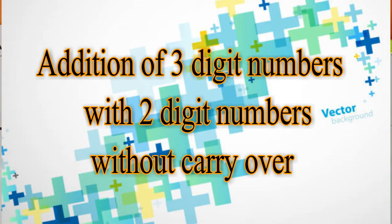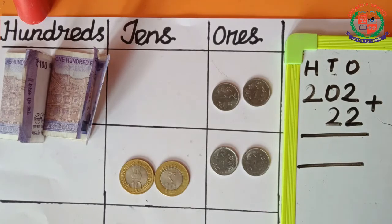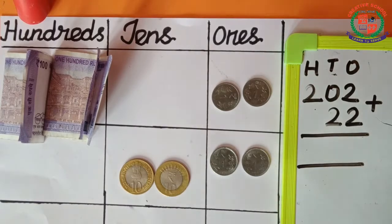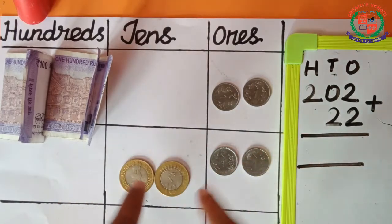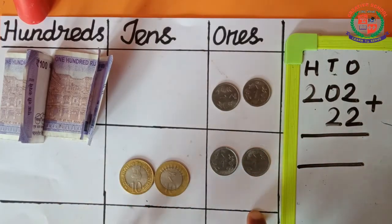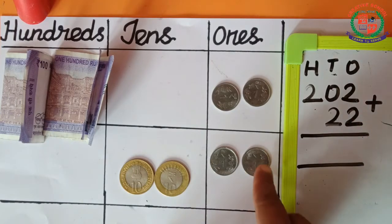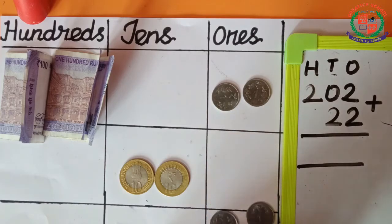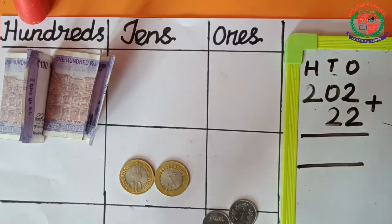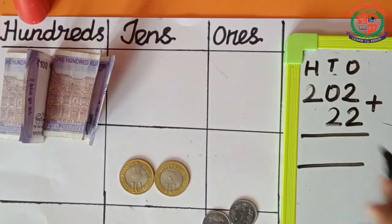Next, we are going to see addition of 3-digit numbers with 2-digit numbers without carry over. Now, let us add 202 plus 22. We arrange the first number and also the second number. First, we have to start at the 1s place. Shall we add 2 plus 2? 1, 2, 3, 4. How many 1s are here? Yes, 4. So, 2 plus 2 is equal to 4.